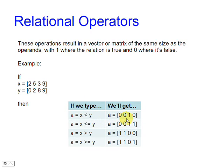These operations result in a vector or matrix of the same size as the operands, with one where the relation is true and zero when it is false.